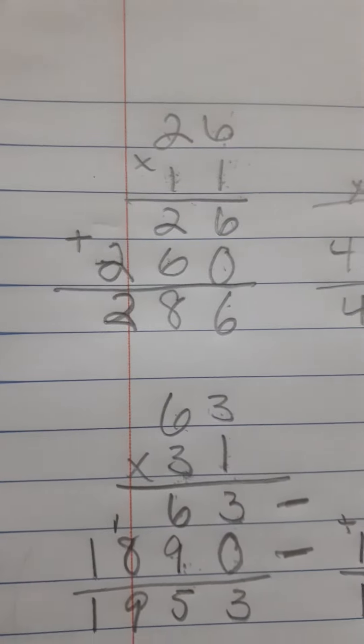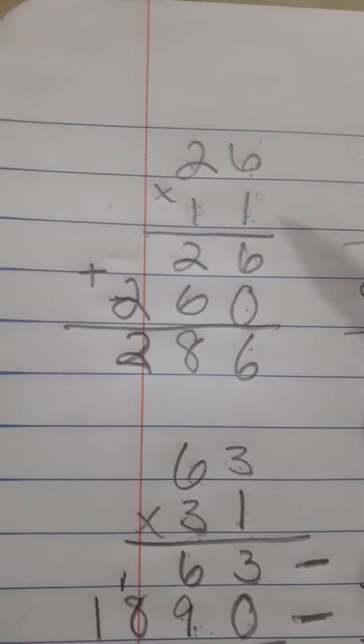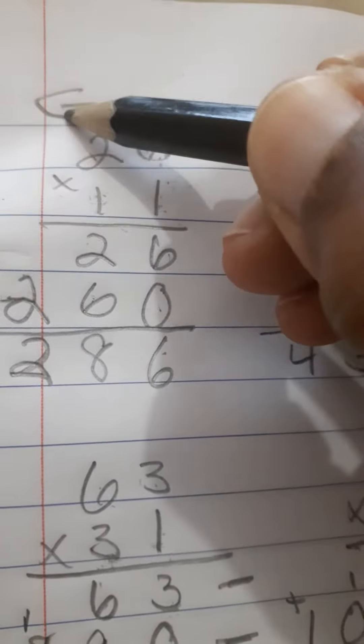So remember we did these last night. I want you to always remember a few things. One, we're always multiplying in this direction. We start with the ones column.